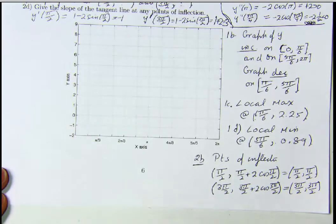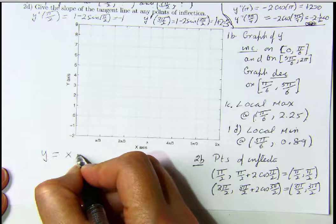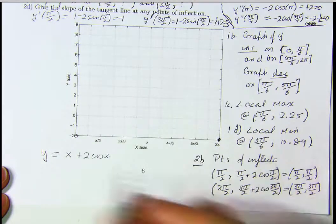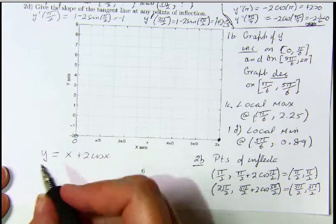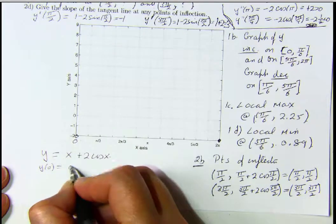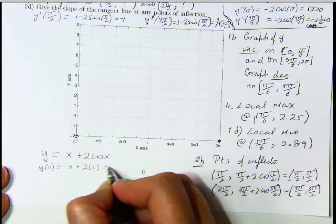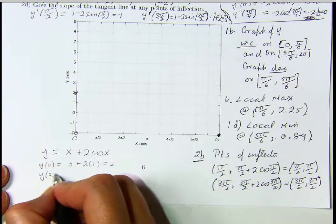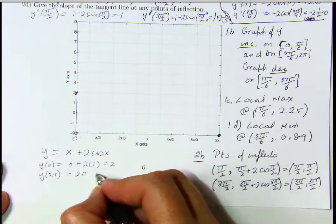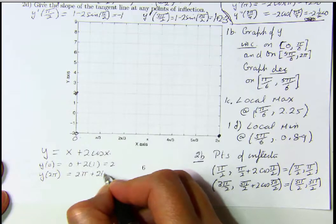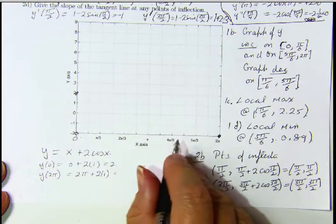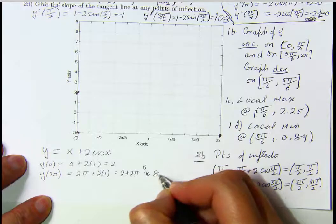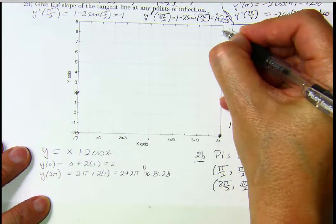Now to graph our function y equals x plus 2 times cosine of x between 0 and 2π: when x equals 0, y is equal to 0 plus 2 times cosine of 0, which is 2. When x is equal to 2π, then this is 2π plus 2 times cosine of 2π, so that's 2π plus 2, which is approximately equal to 8.28.